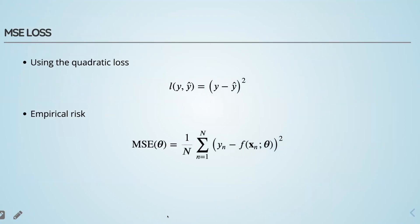For regression problems, the most commonly used loss function is the quadratic loss, which simply finds the difference between the actual and predicted value. Here y-hat is what the model predicts and y is the actual output. After finding this difference, we raise it to the power of 2. Therefore the empirical risk reduces to 1/N times the summation of the squared differences between actual outputs and predicted values — and this is what is known as mean squared error.